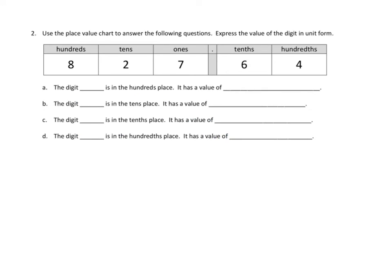Let's take a look at another problem. Problem number two asks us to use the place value chart to answer the following questions: express the value of the digit in unit form. Let's take a look at the first couple — I'm going to do 2A and 2B, then leave you with the last couple. The digit blank is in the hundreds place. That's the hundredths place — close, but: tenths, ones, tens, hundreds. The hundreds place looks like it's the eight. So the digit eight is in the hundreds place; it has a value of eight hundreds. For the second question, the digit blank is in the tens place. That's the tenths place — very close, but not the same. There's the tens place; it looks like the number two. It has a value of two tens.